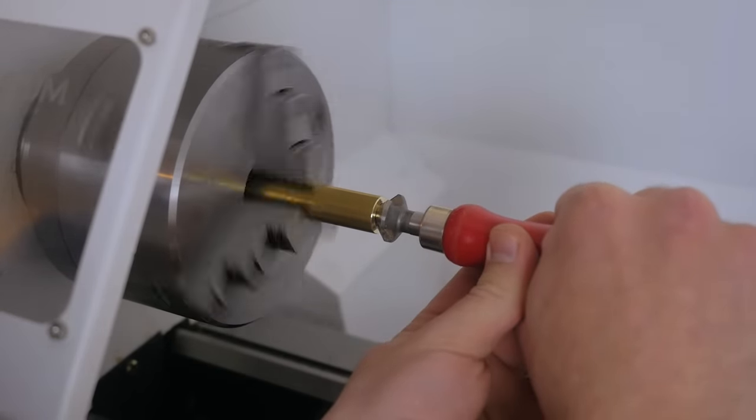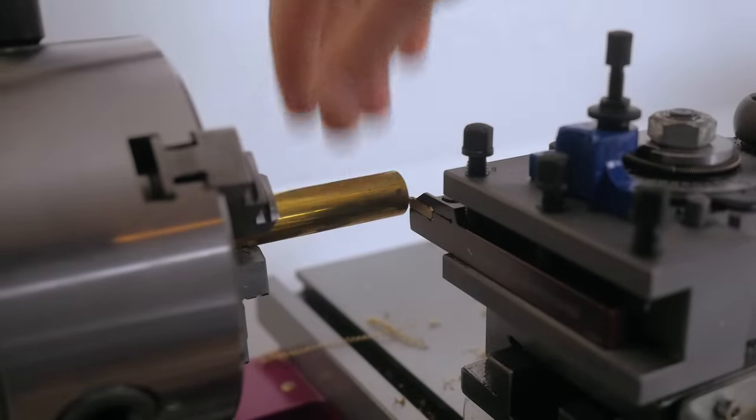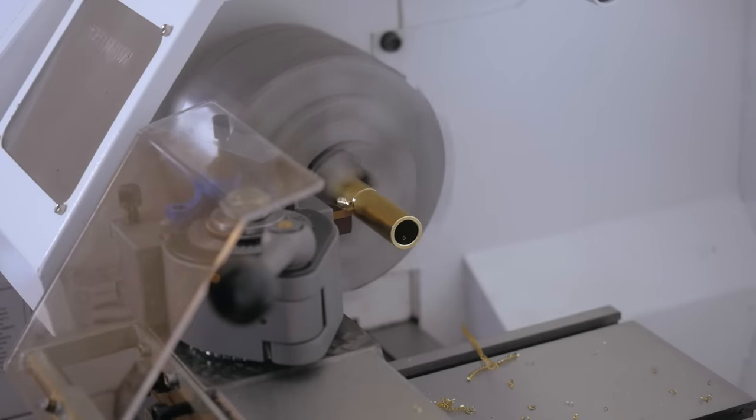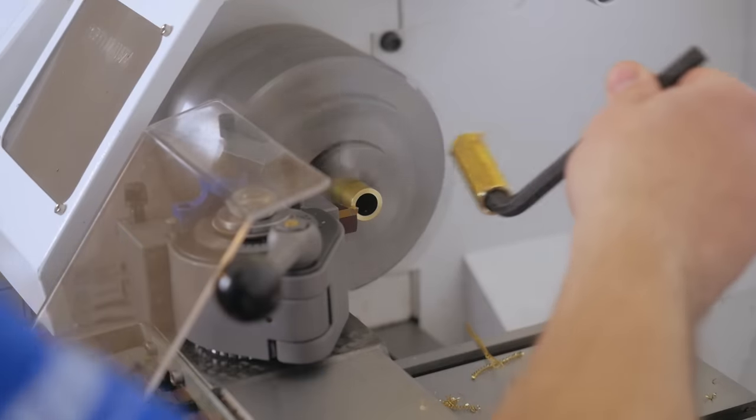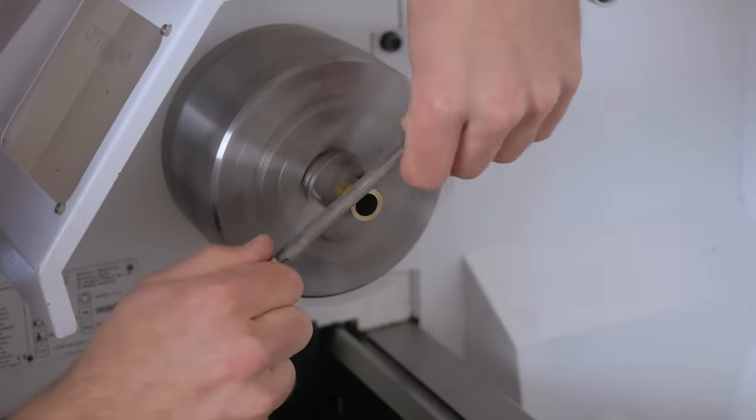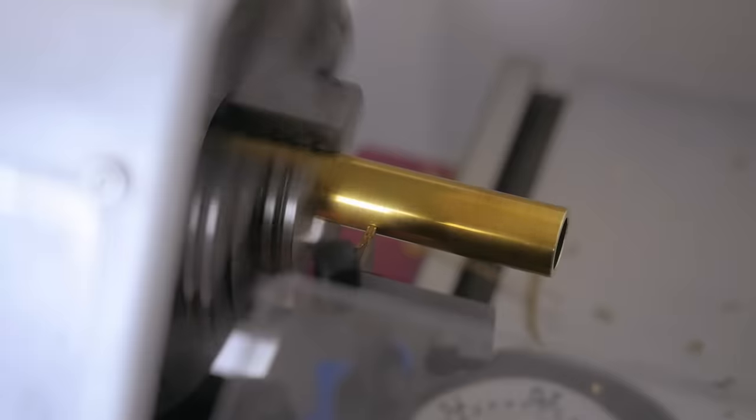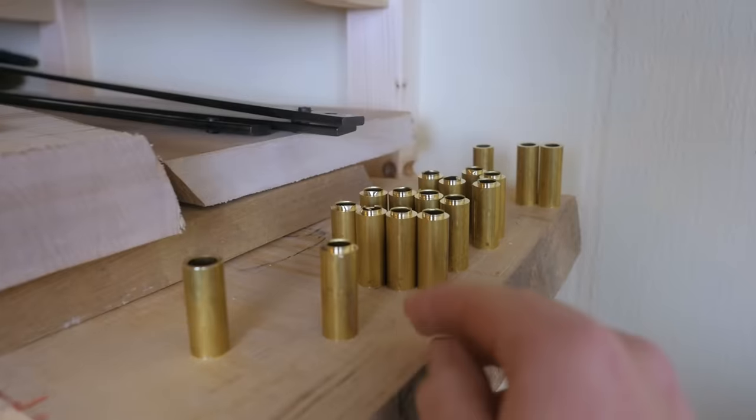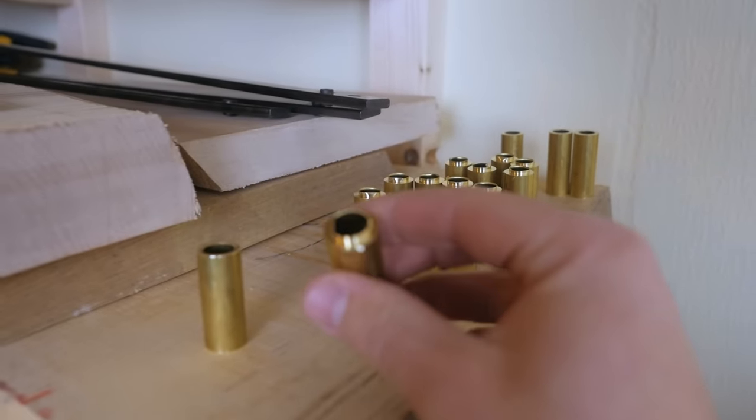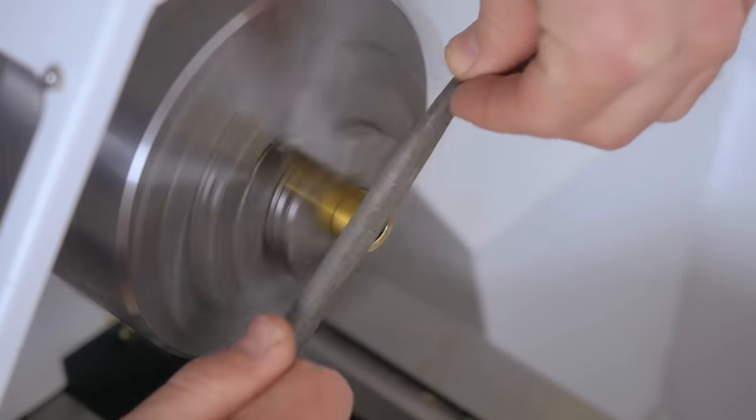I turned one side through and chamfered the outer and inner edge. Then lined it up with a cutoff tool to set the right length. And then parted it off. Then again chamfering edges and parting it off. Now they are all parted off. And I now need to finish the other side. And then they are done.